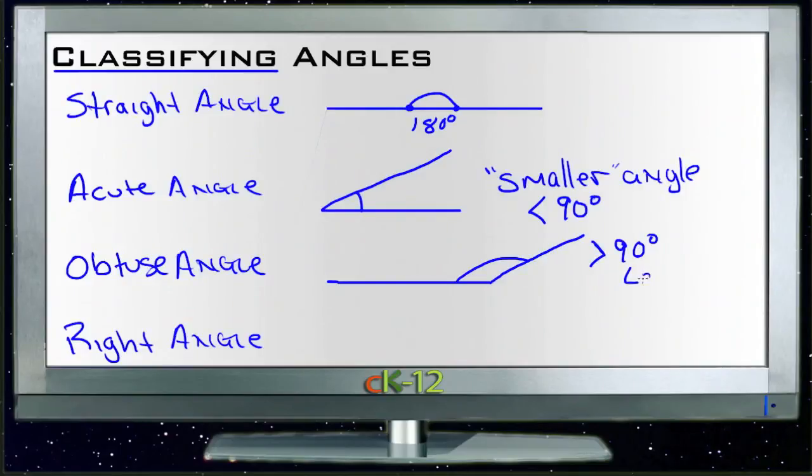Obtuse actually means like dull, not sharp, so you can see where that term comes from.